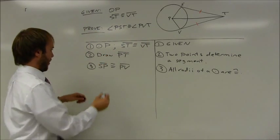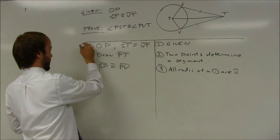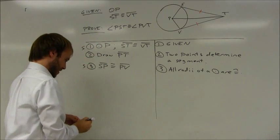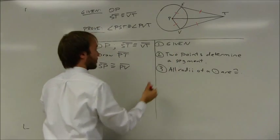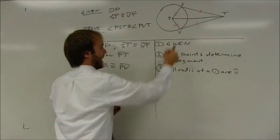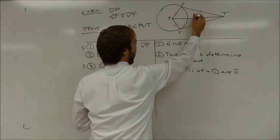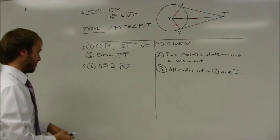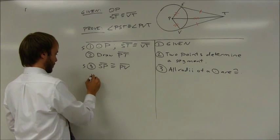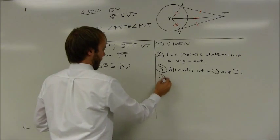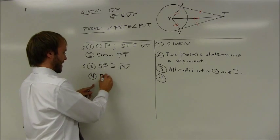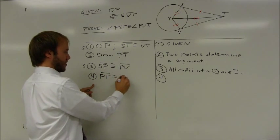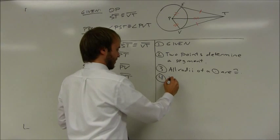So if you look back, I now have a pair of congruent sides. I now have a second pair of congruent sides. And I have a third shared side, an auxiliary line that I put in. And I'm going to finish this out. PT is congruent to itself. That's the reflexive property.